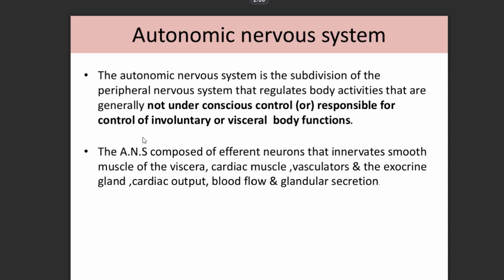The autonomic nervous system is composed of neurons that innervate smooth muscles, cardiac muscles, vasculature, and exocrine glands. It controls cardiac output, blood flow, and glandular secretion.